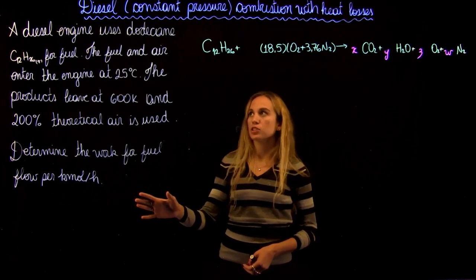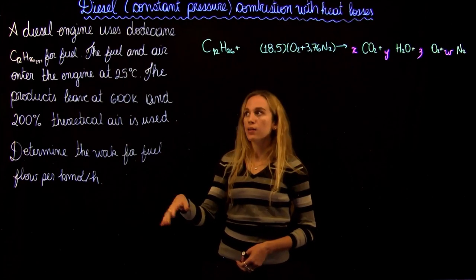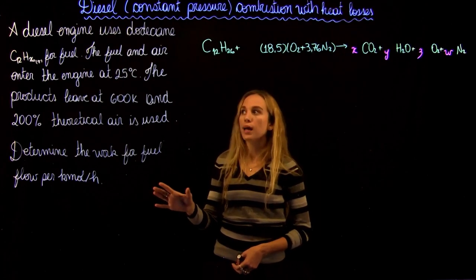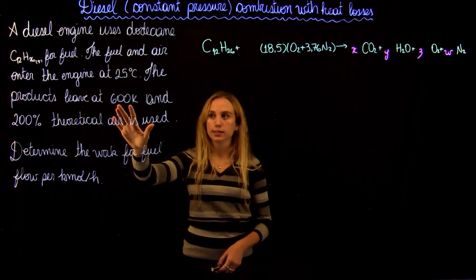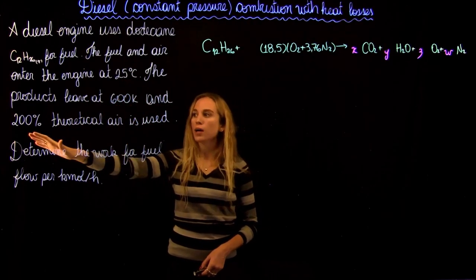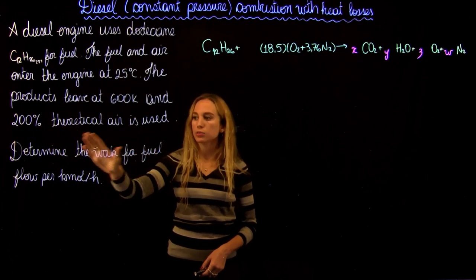We are told that a diesel engine uses dodecane for fuel. The fuel and air enters the engine at 25 degrees Celsius. The products are going to leave at 600 Kelvin and 200% theoretical air is used.